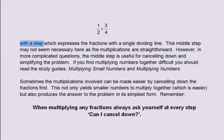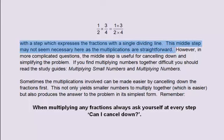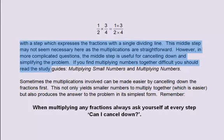Next, do a step which expresses the fraction with a single dividing line: 1 multiplied by 3, divided by 2 multiplied by 4. This middle step may not seem necessary here as the multiplications are quite straightforward. However, in more complicated questions, the middle step is useful for cancelling down and simplifying the problem. Returning to the question: 1 multiplied by 3 is 3, and 2 multiplied by 4 is 8, so the answer is 3/8.